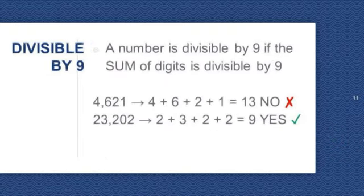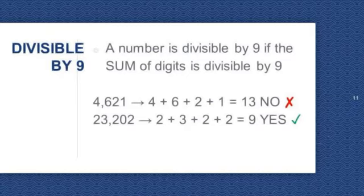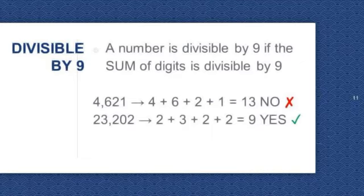Divisible by 9. A number is divisible by 9 if the sum of the digits is divisible by 9. Let's try 4,621. 4 plus 6 plus 2 plus 1 is equal to 13. Is 13 divisible by 9? No, so 4,621 is not divisible by 9. Next, 23,202. 2 plus 3 plus 2 plus 2 is equal to 9. Is 9 divisible by 9? Of course. So 23,202 is divisible by 9.